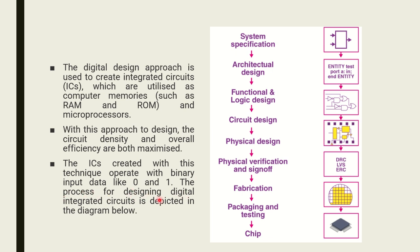The process for designing digital integrated circuits is shown in this diagram. The steps are: 1st — system specification, 2nd — architectural design, 3rd — functional and logic design, 4th — circuit design, 5th — physical design, 6th — physical verification and sign-off, 7th — fabrication, 8th — packaging and testing, and the 9th and final step is production of the chip.